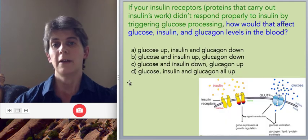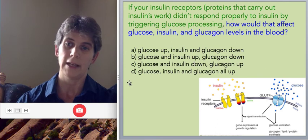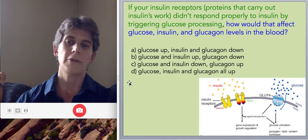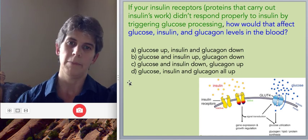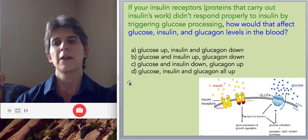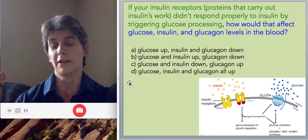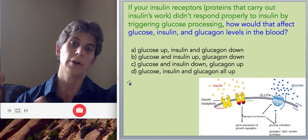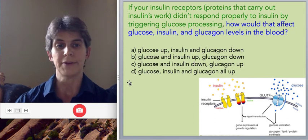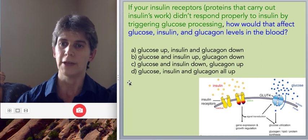Okay, last one. If your insulin receptors, which are the—as many of you know—proteins that carry out insulin's work by binding to insulin and triggering signal transduction, if those receptors didn't respond properly to insulin because there was something wrong with the signal transduction pathway or the receptor itself, so that you didn't get much glucose transport in response to insulin binding, how would that affect glucose, insulin, and glucagon levels in the blood? So think about that, and you can look at this cartoon as well, and then decide which answer you think is correct.